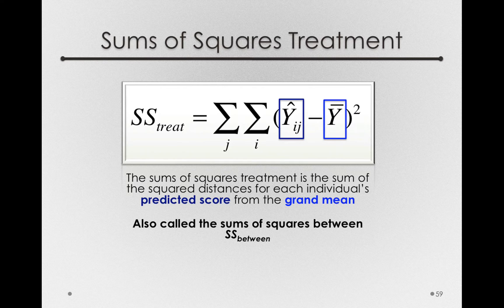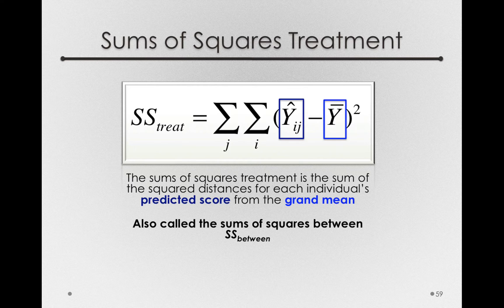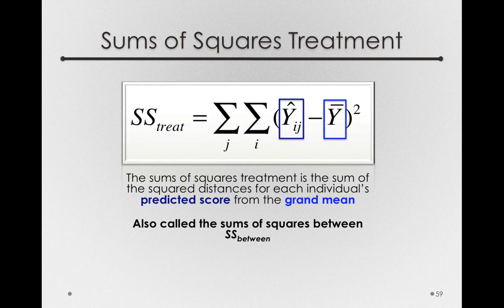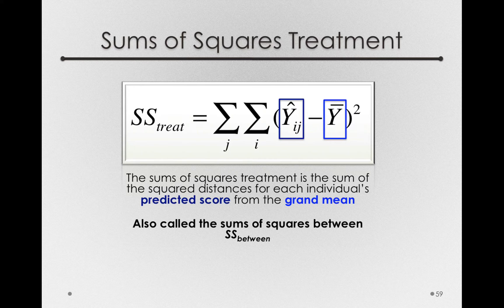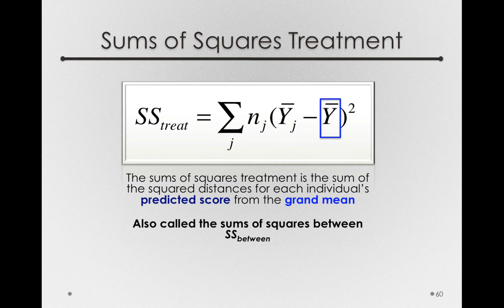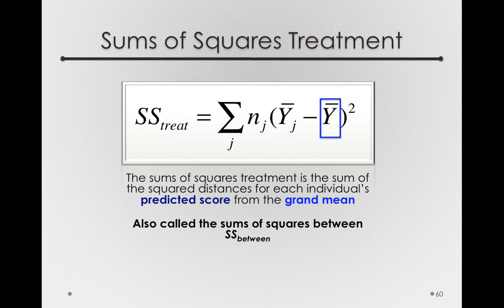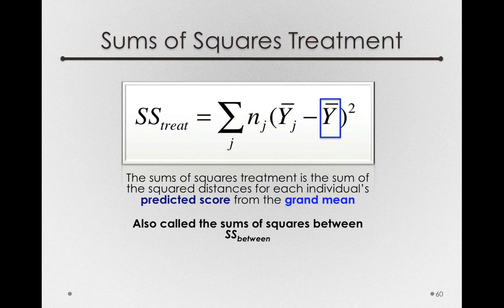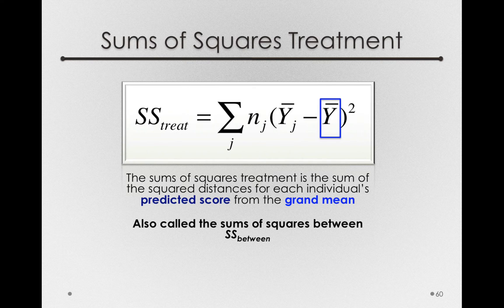For instance, Tom had a predicted score as the delta's group mean, but everybody else in the delta group also had that predicted score. So another way we can write the sums of squares for treatment is the number of people in each group, the n sub j, multiplied by the deviation between the group mean for the group j minus the grand mean.